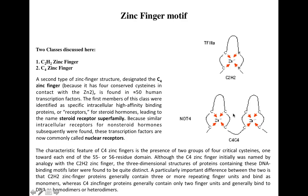The important difference between the two classes is that C2H2 zinc finger proteins generally have three or more zinc finger domains and bind to DNA as monomers, while C4 zinc finger proteins generally contain two finger units and can bind to DNA either as homodimers or heterodimers.